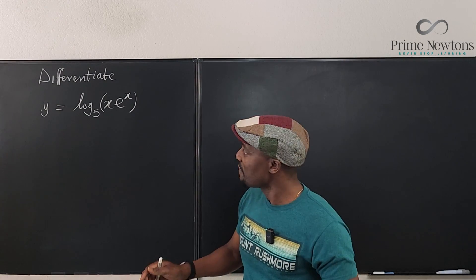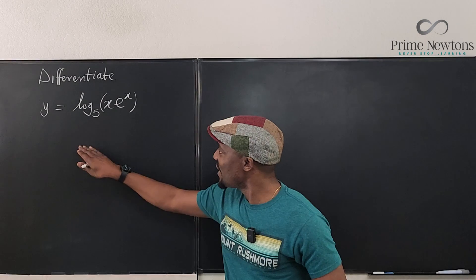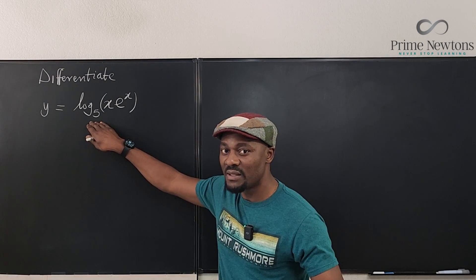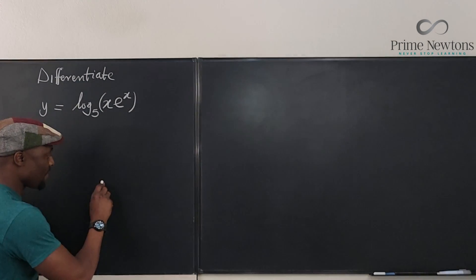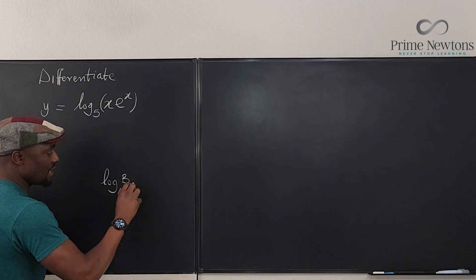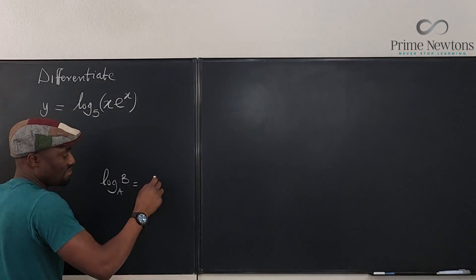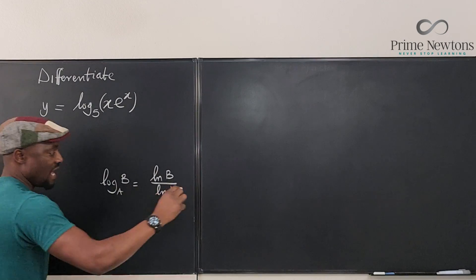So what I'm going to do is, before I do anything else, is to change the base to the natural log base. So I'm going to apply the log rule. Remember, this is the rule: log b to base a can be written as natural log of b over the natural log of a.